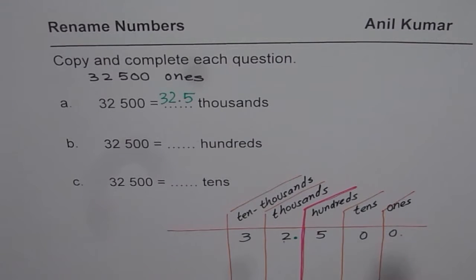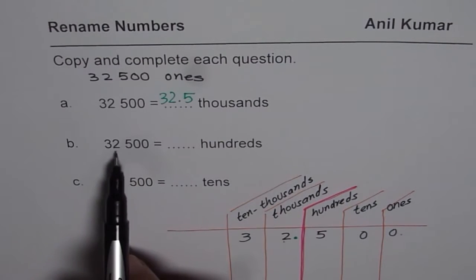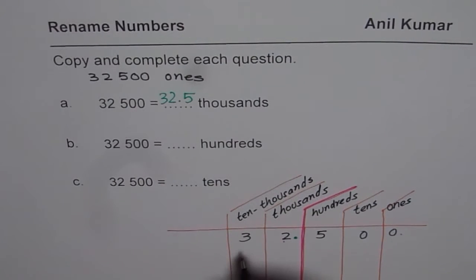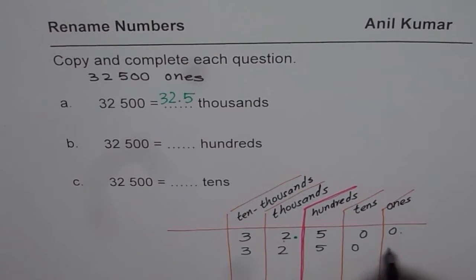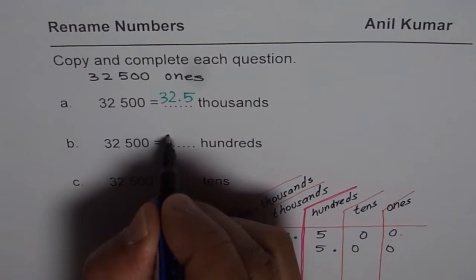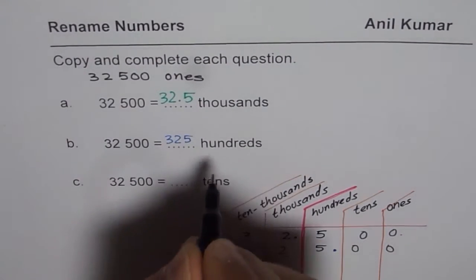Do the same exercise and rename 32,500 as hundreds. So let me help you. 32,500, this time we want to rename it as hundreds. So we will put a decimal after hundreds. Three, two, five hundred. So we get 325 hundreds.